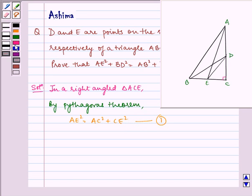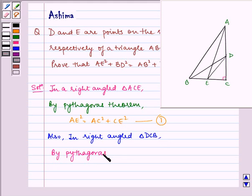Also, in right angled triangle DCB, by Pythagoras theorem, DB square, that is the hypotenuse, is equal to sum of the squares of other two sides, that is DC square plus BC square. Let us name it as 2.